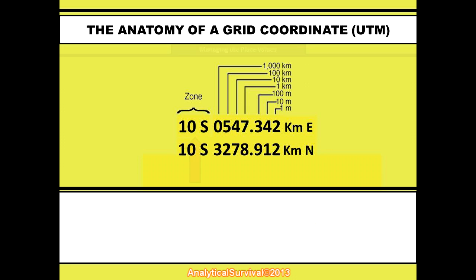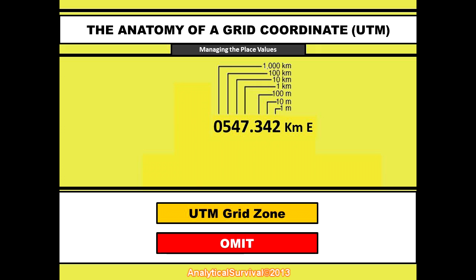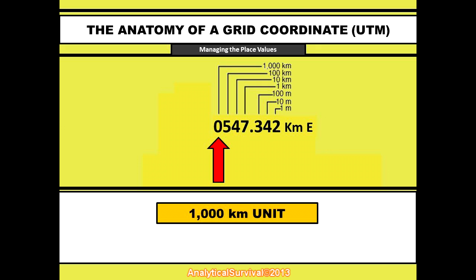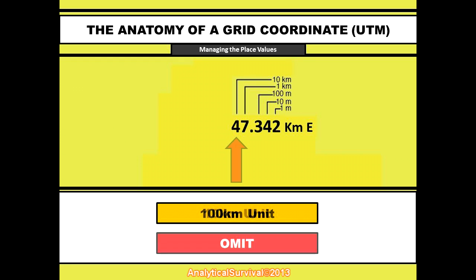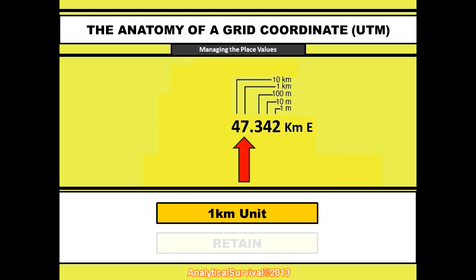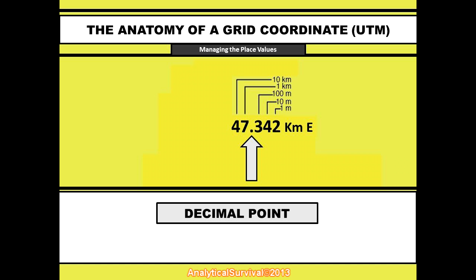For example, it's not necessary to notate the UTM zone — everybody in your local area already knows what zone you're in, so you can drop this. Same thing with the 1,000-kilometer place value; it represents gigantic units of 1,000 square kilometers, not relevant to an area of 10 or 20 square kilometers you're patrolling on foot. Drop it. Same for the 100-kilometer place value — for localized areas it only clutters the coordinates. Now the 10k place value you can keep, and the 1,000-meter place value is likewise a definite keeper.